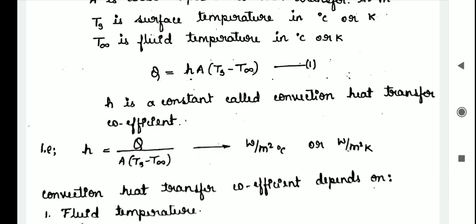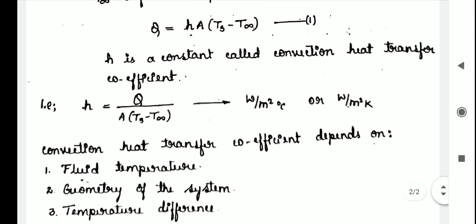That is, h equals Q divided by A times Ts minus T infinity, which equals Watt per meter square degree Celsius or Watt per meter square Kelvin.